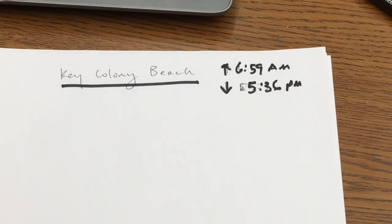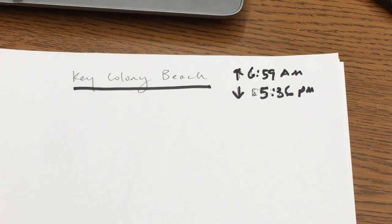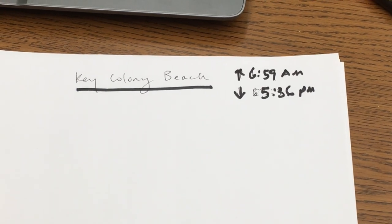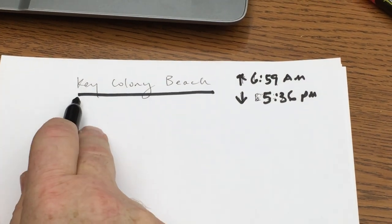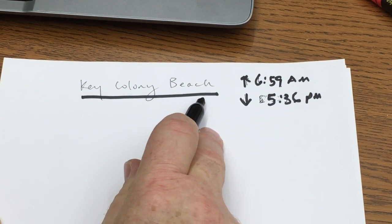This is Mr. Watkins with his how to subtract sunrise from sunset to get the total daylight for an area. We're going to use Key Colony Beach, which is in Florida, in the Keys. It's a beautiful place. You should go.